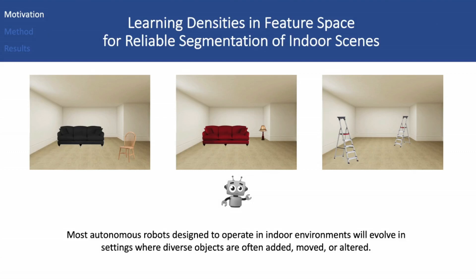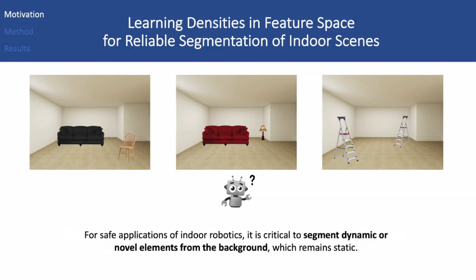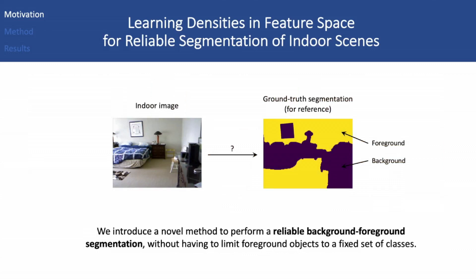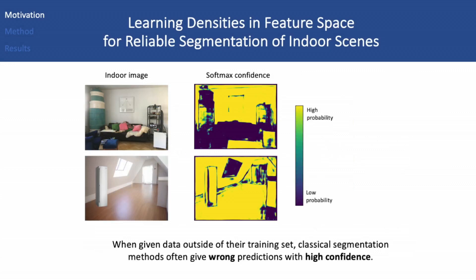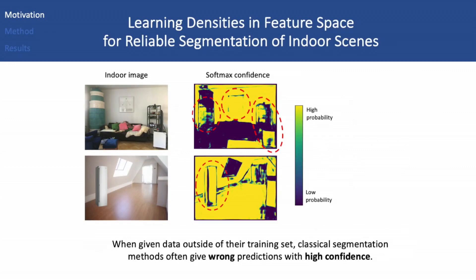Most autonomous robots designed to operate in indoor environments will evolve in settings where diverse objects are often added, moved or altered. For safe applications of indoor robotics, it is critical to segment dynamic or novel elements from the background, which remain static. We introduce a novel method to perform a reliable background-foreground segmentation without having to limit foreground objects to a fixed set of classes. When given data outside of their training set, classical segmentation methods often give wrong predictions with high confidence, as seen in these examples.